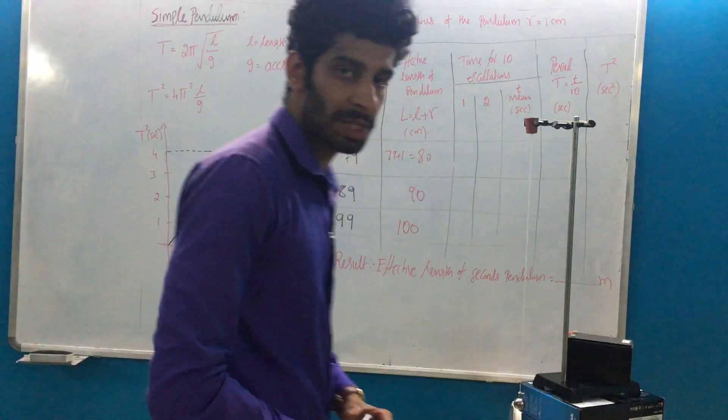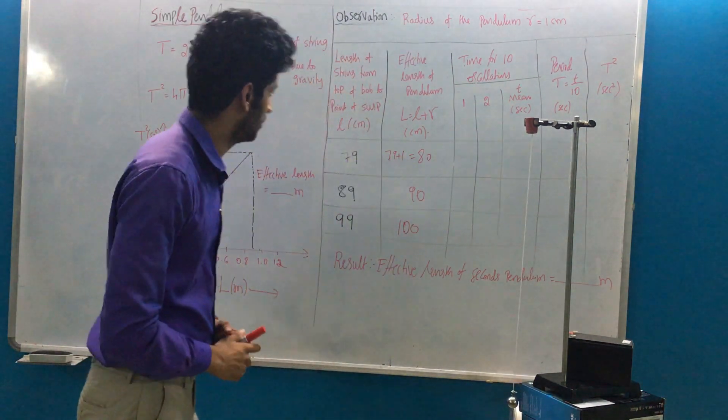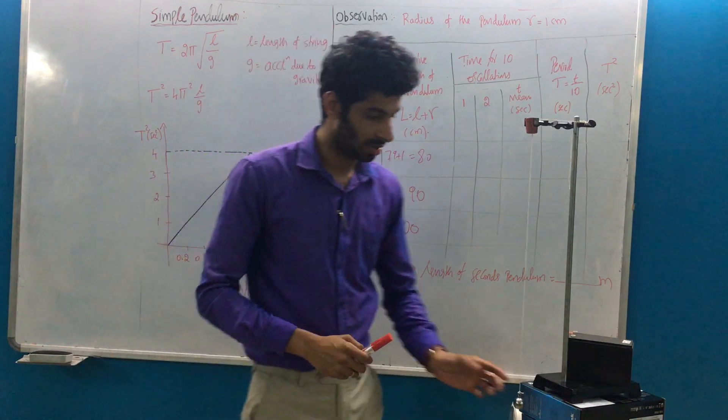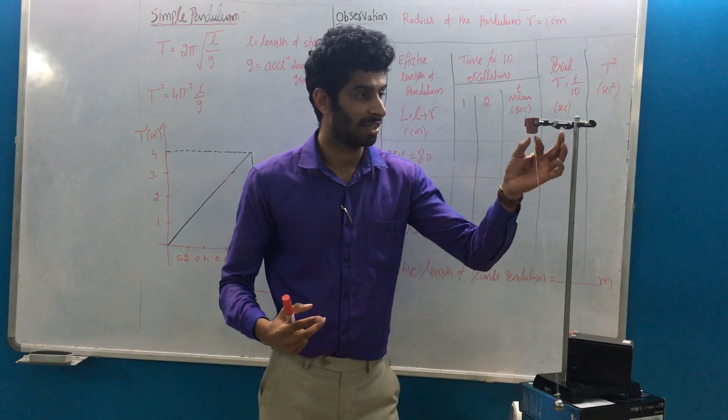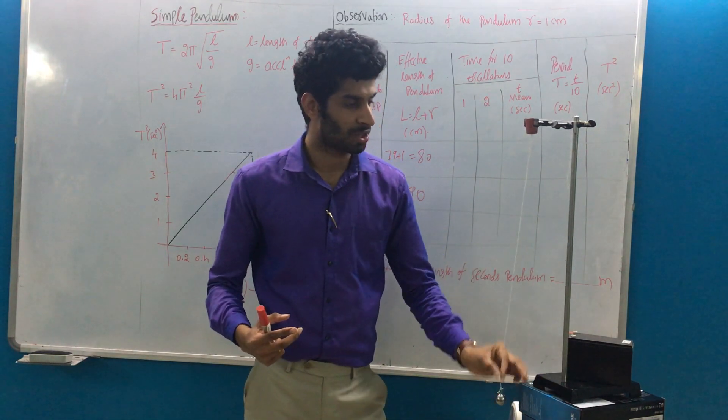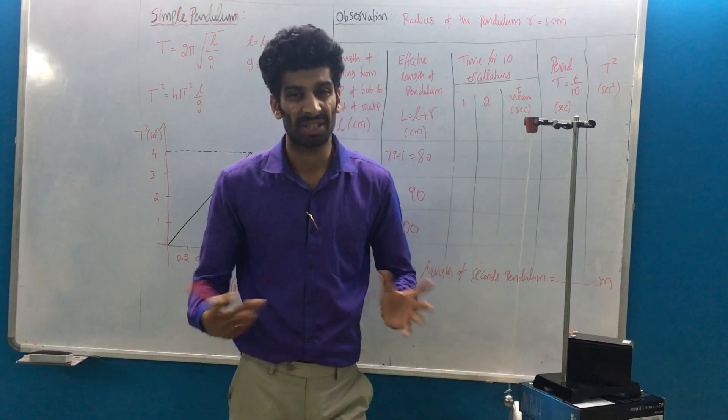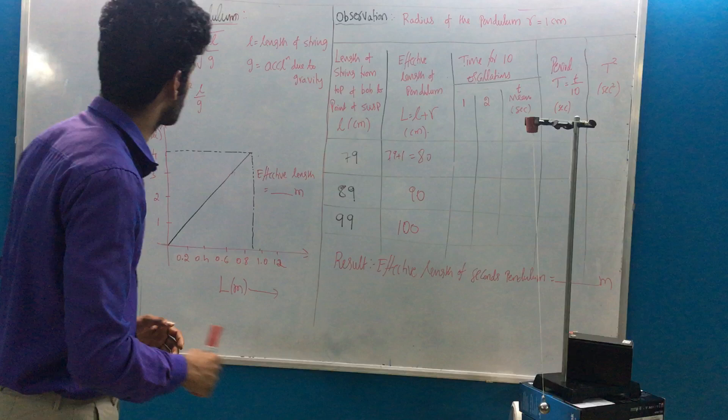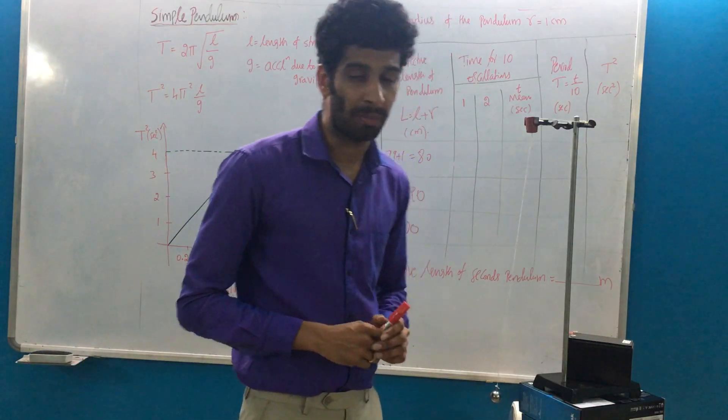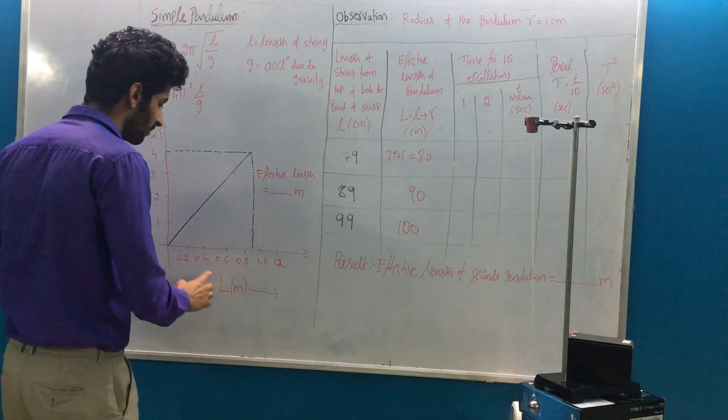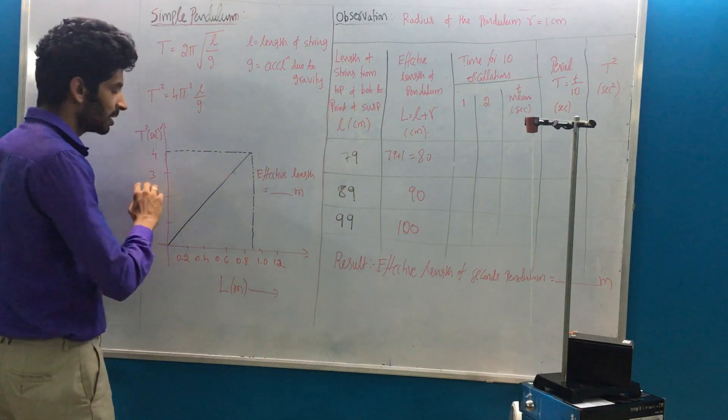Hello, and with one more experiment, that is a simple pendulum. Here it is a nice bob of certain mass and rigid support fixed with a string of certain length. The aim of this experiment is to find out the effective length of the seconds pendulum as well as to draw the graph of length of the string versus the square of the time period.